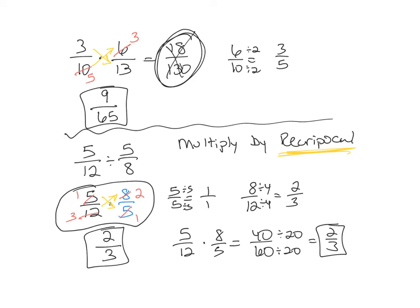Let's look at one more. Eight-fifteenths divided by seven-tenths. Okay, so remember we are going to multiply by the reciprocal, so we're going to flip that over. Let me erase a little bit of that, get it out of the way.